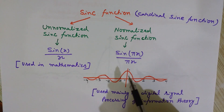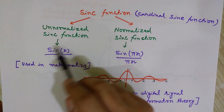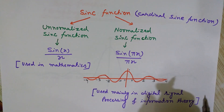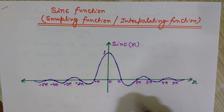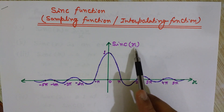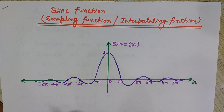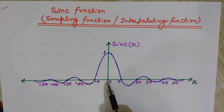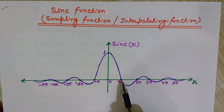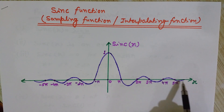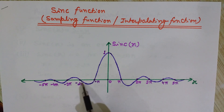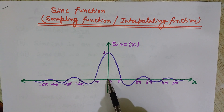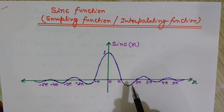Let's now analyze the graph of the unnormalized sinc function sin(x)/x. You can see that it has roots at π, 2π, 3π on the positive side, and at −π, −2π, −3π on the negative side — that is, roots at ±nπ. The value at 0 is 1.